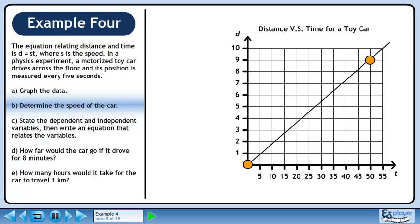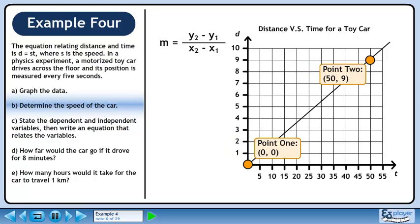In part b, we'll determine the speed of the car. Let's find the slope using the points. Plug the point values into the slope formula. This gives us 9 over 50.